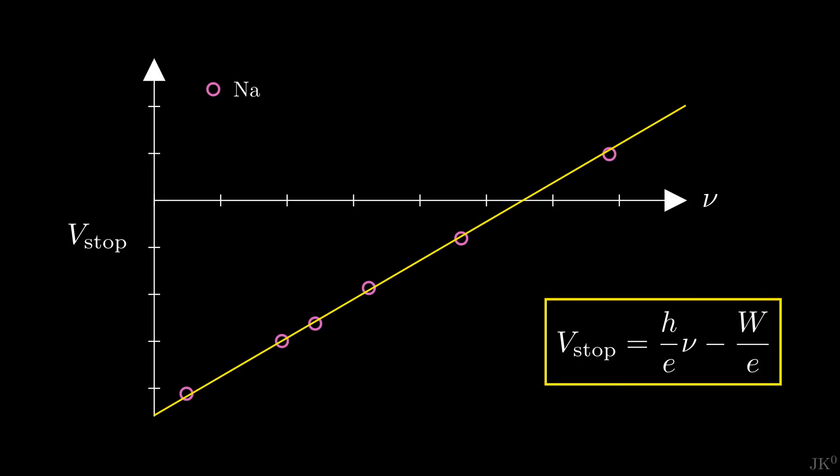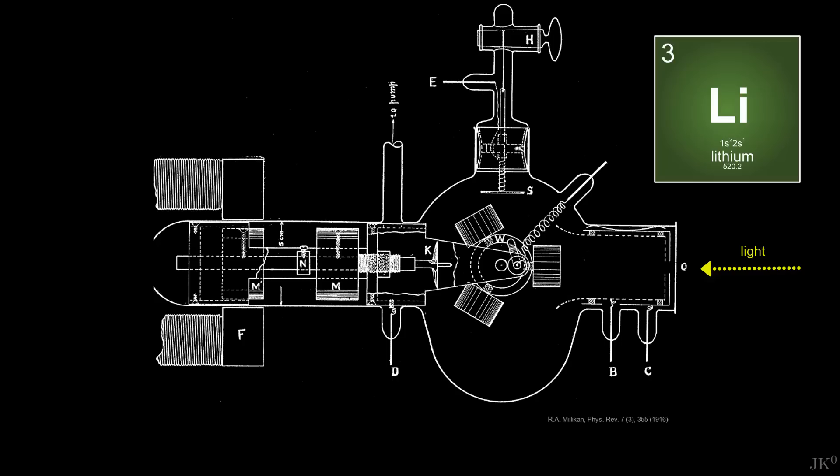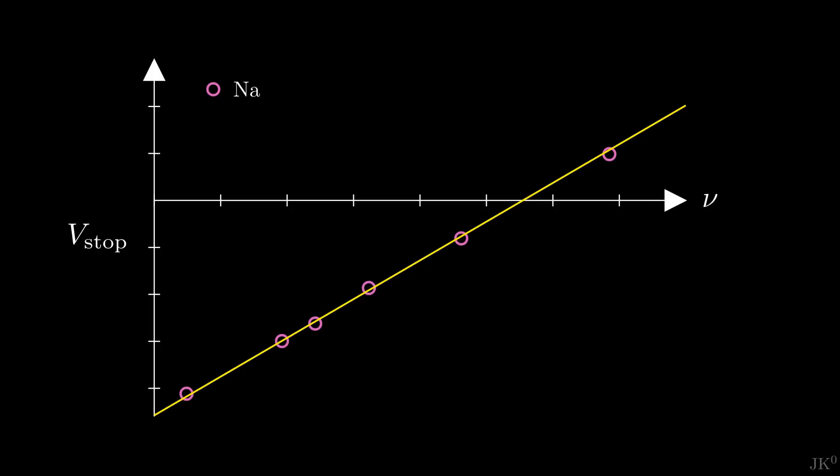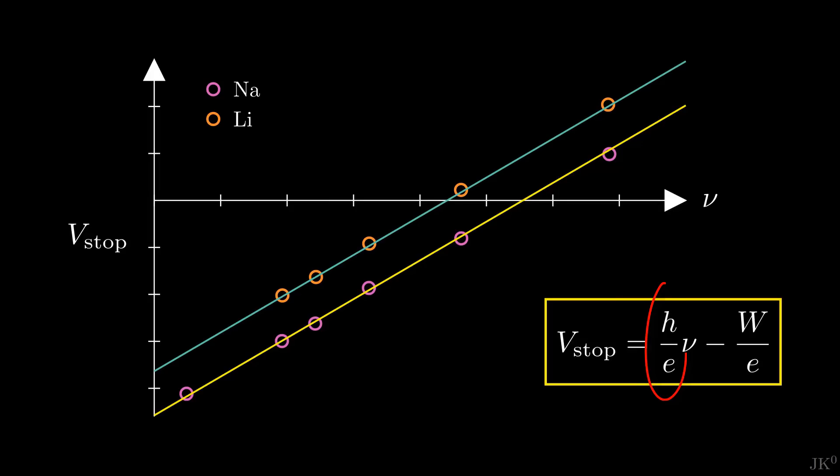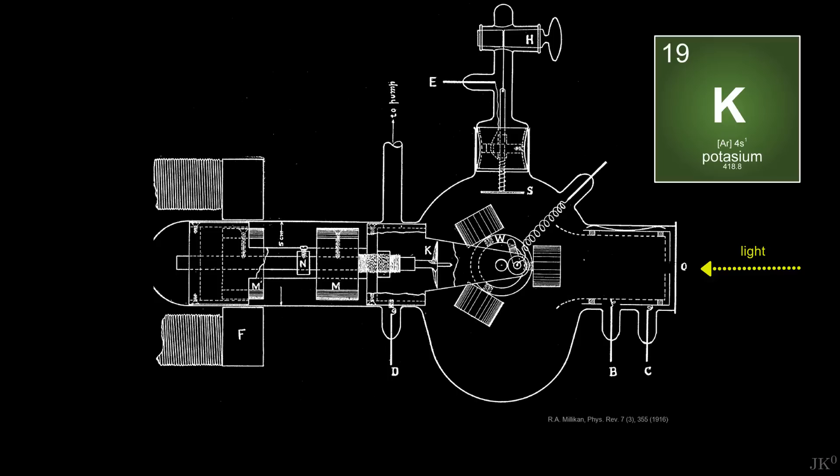After powering up the electromagnets to rotate the wheel, cleaning the lithium metal, and shining a new sample with the same frequencies, Millikan saw in disbelief the appearance of a new straight line. Not only that, it was perfectly parallel to the sodium line, meaning that the slope was the same, just like Einstein predicted. Millikan wanted to check now with potassium, but as he wrote, an accident prevented the inclusion of data on potassium.